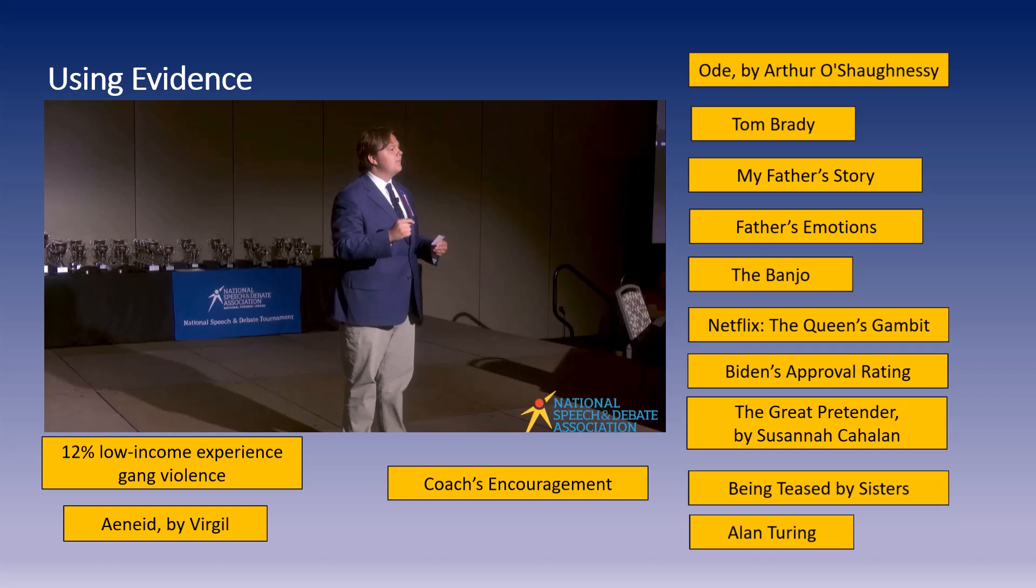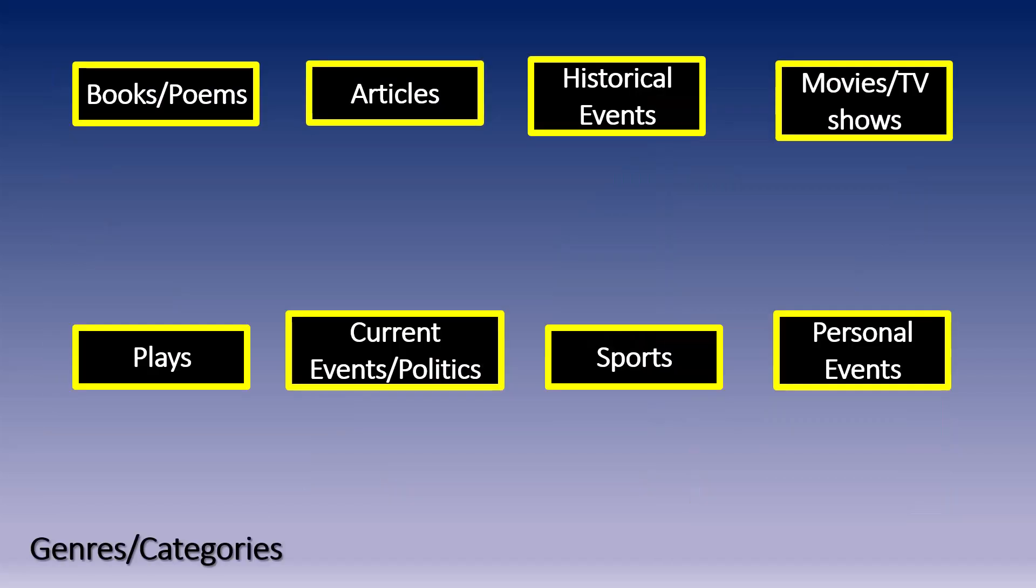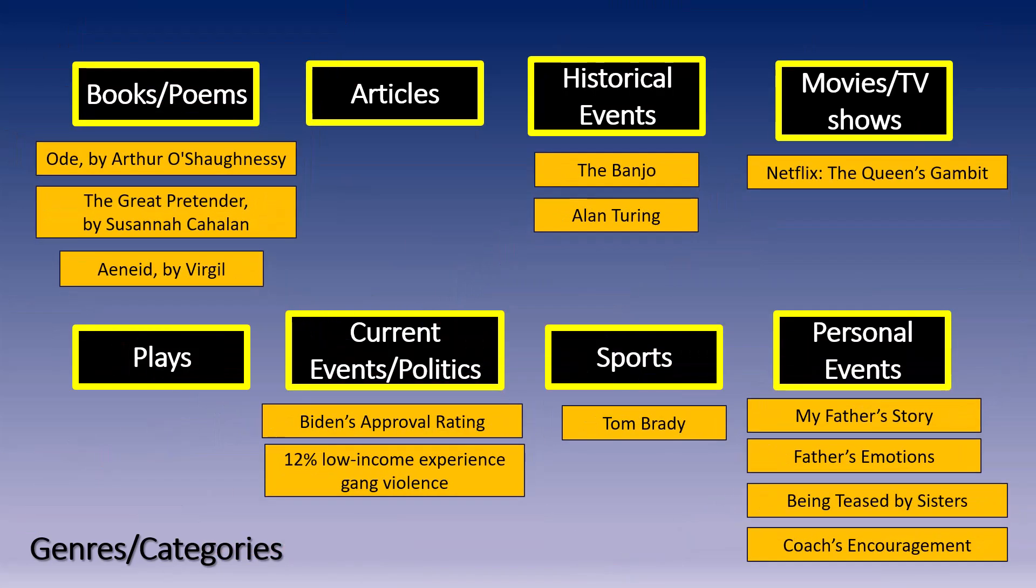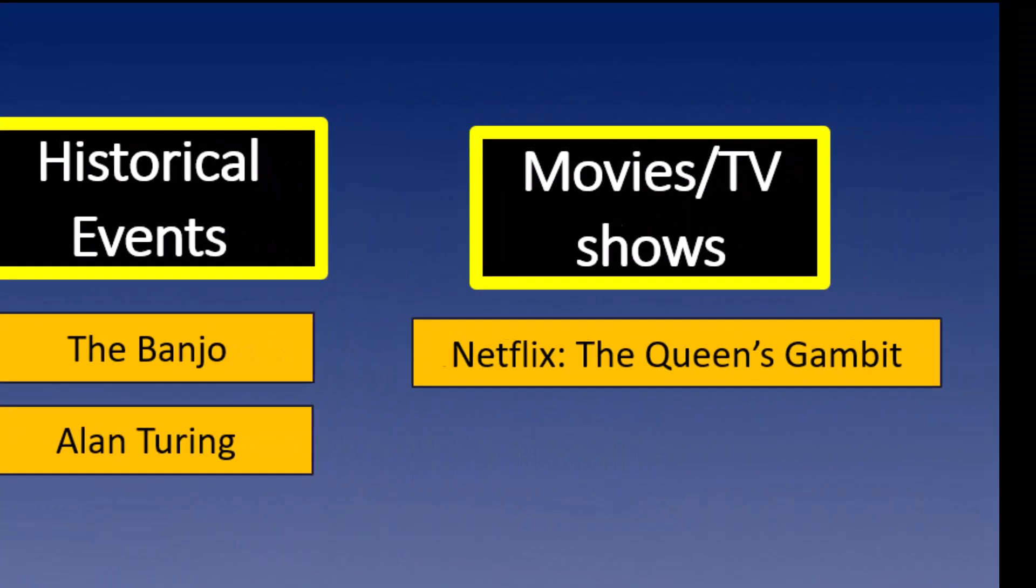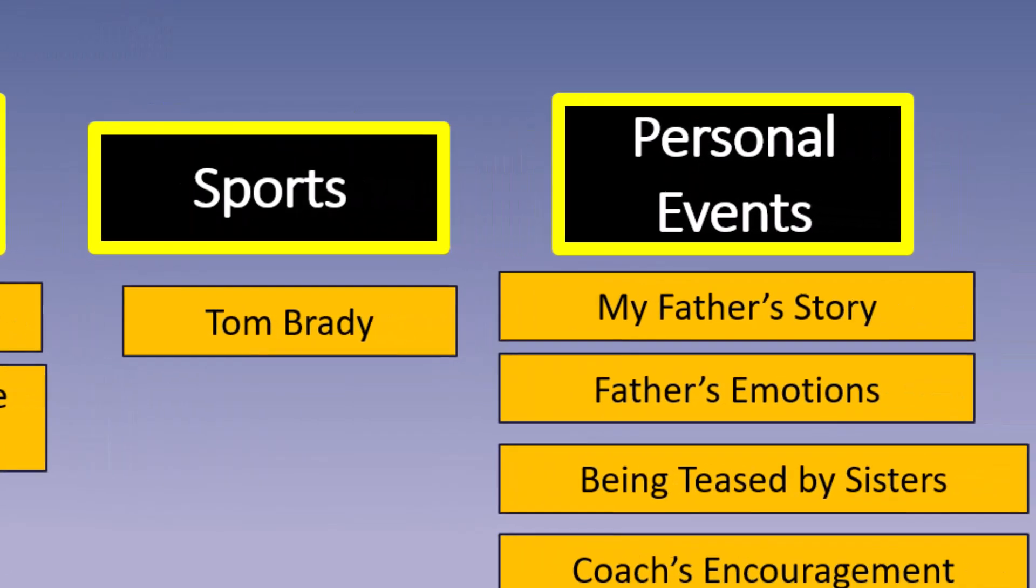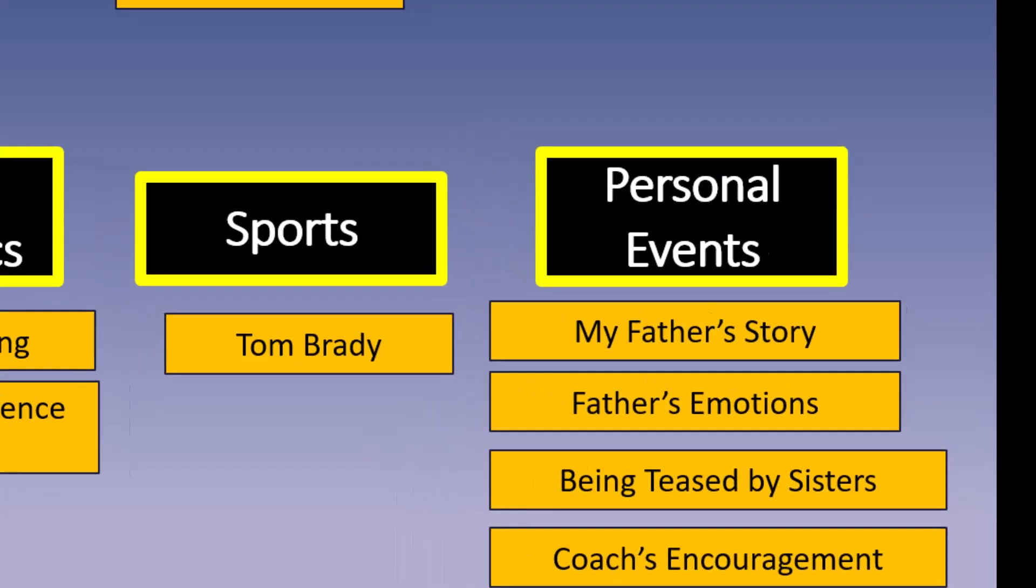You see that all of these speakers were using evidence and examples to support the argument they're making. Some of them are more sophisticated examples, like statistics on crime or specific books that they read, and others are personal stories. Here's how their examples fall in the categories that we created for this video. You can see all of the different speakers used a variety of different categories to get their examples. We have books and poems, historical events, Netflix shows, statistics from politics or current events, sports stars like Tom Brady, and even several individual personal stories.